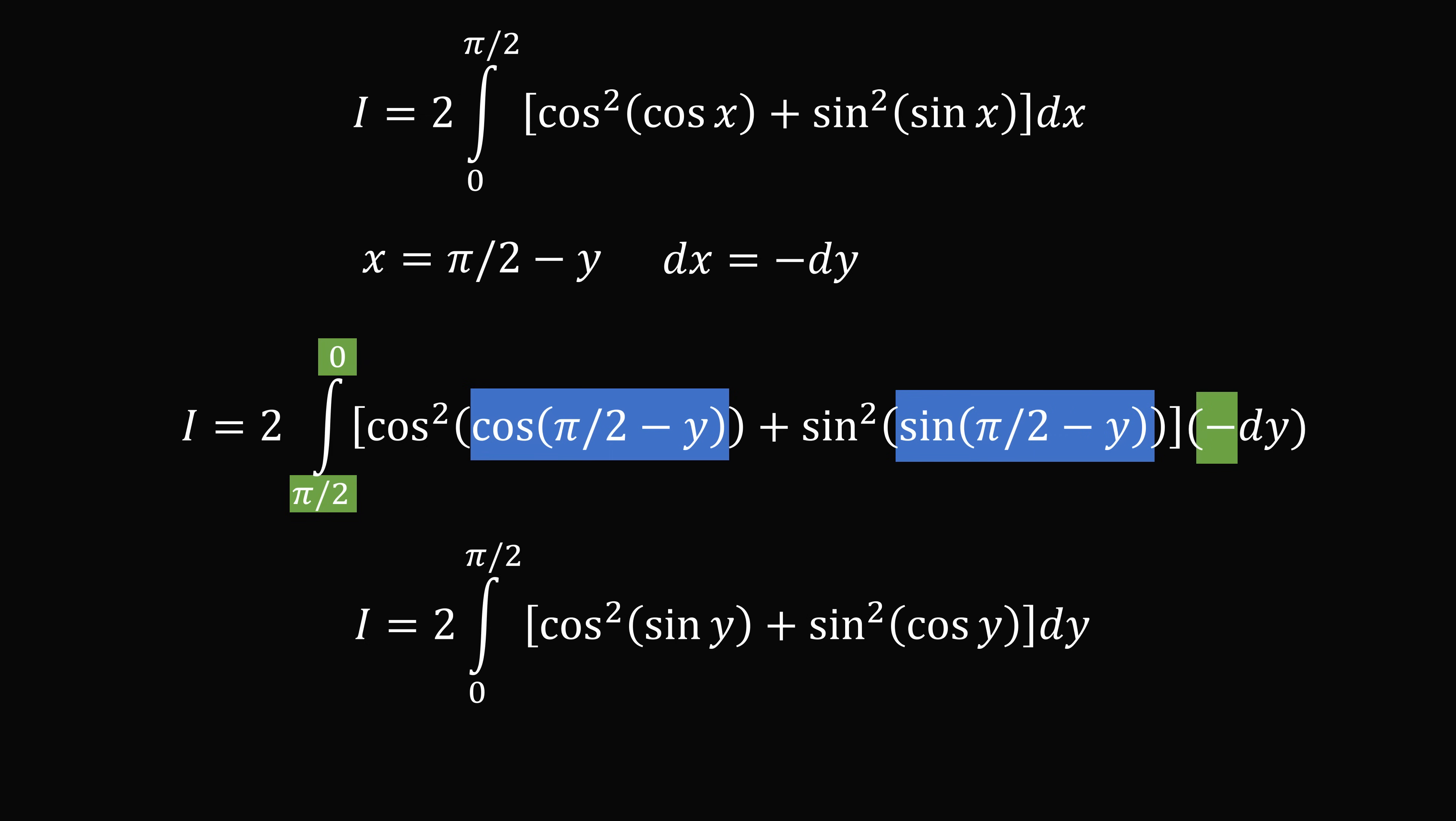So the integral becomes two times the integral from zero to pi over two of cosine squared of sine y plus sine squared of cosine y dy.